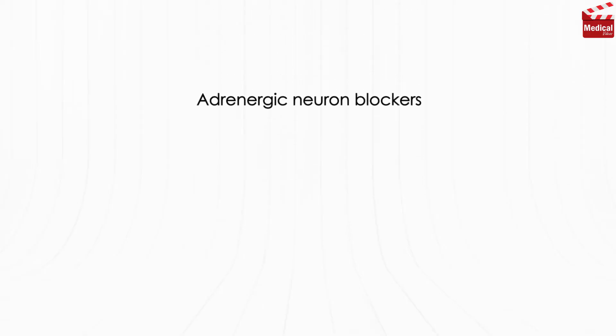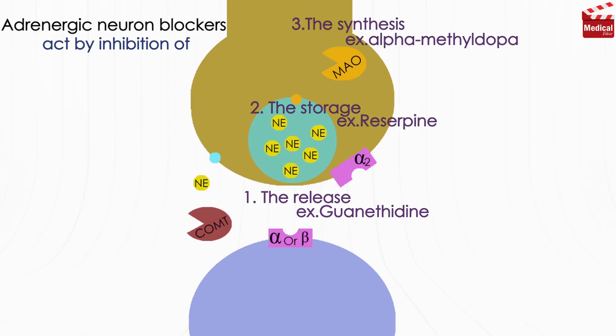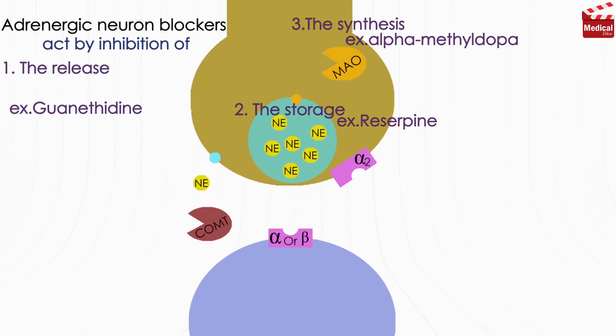The adrenergic neuron blockers are those agents that act by inhibition of the release of catecholamines, such as guanethidine, the storage of catecholamines, such as reserpine, and the synthesis of catecholamines, such as alpha-methyldopa. Let's discuss them one by one.